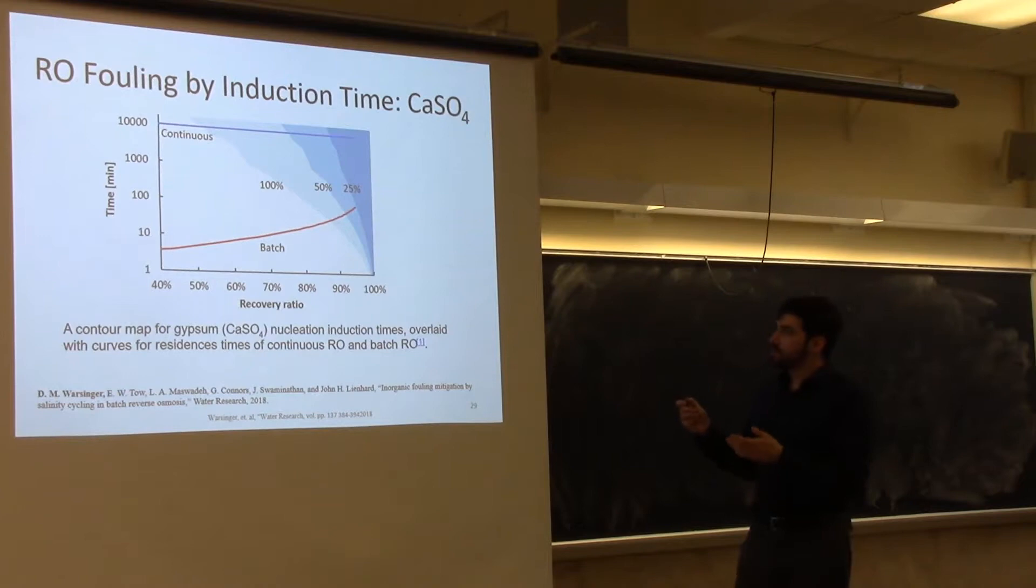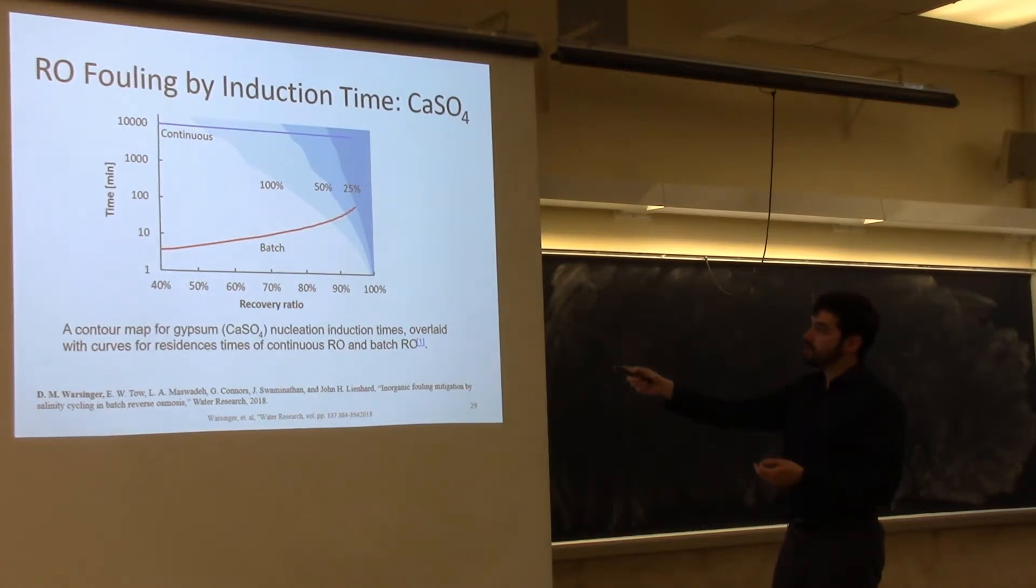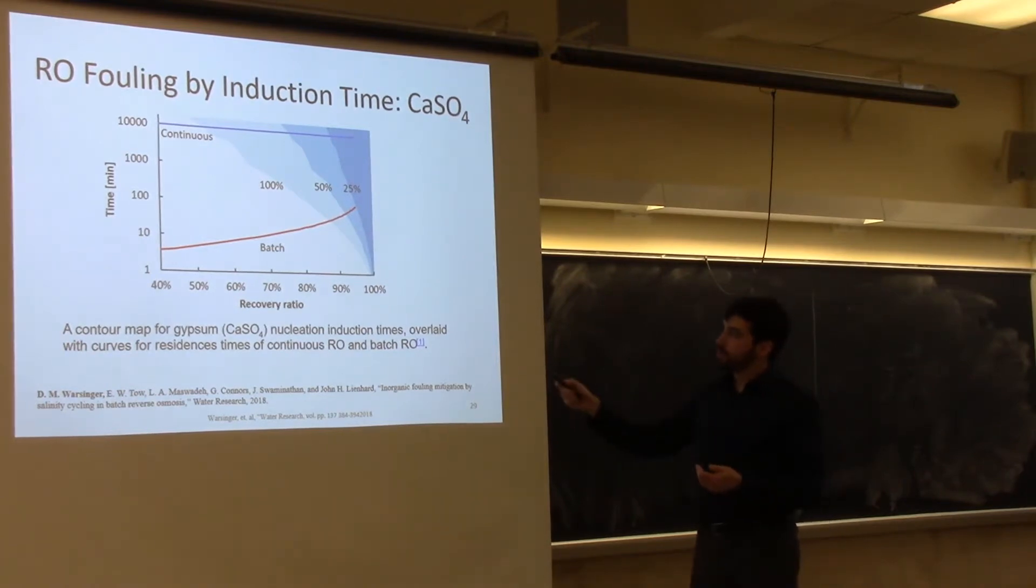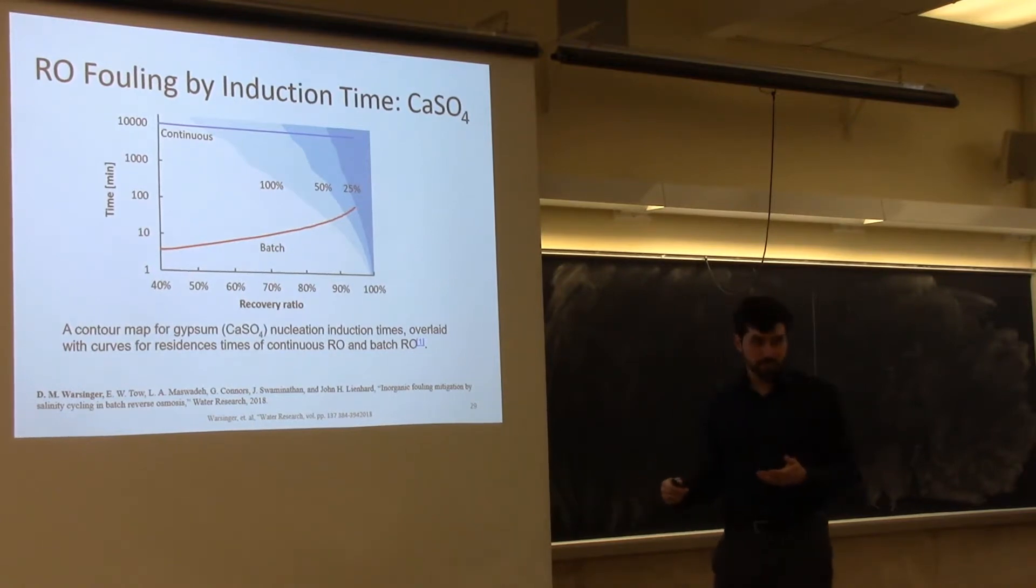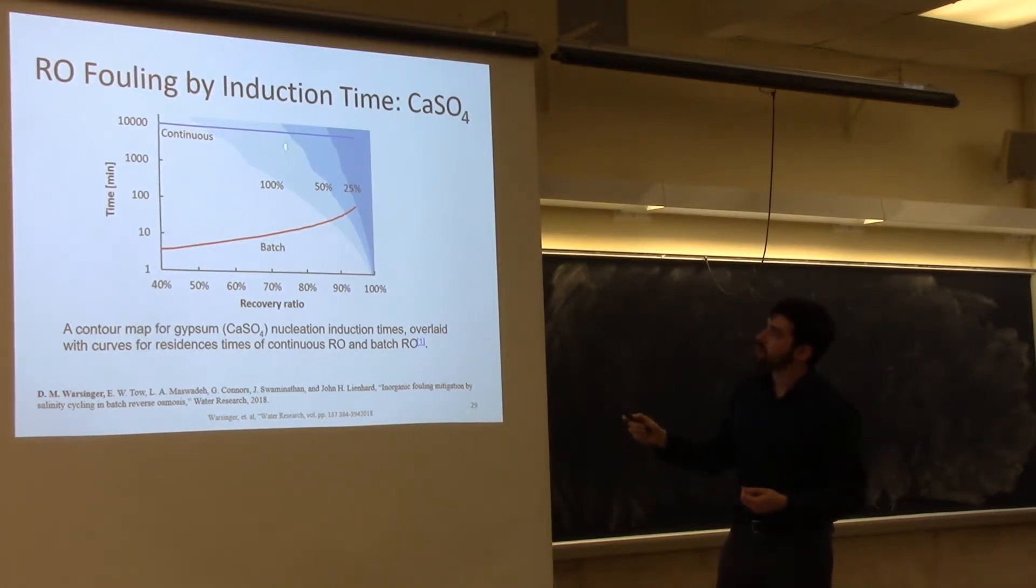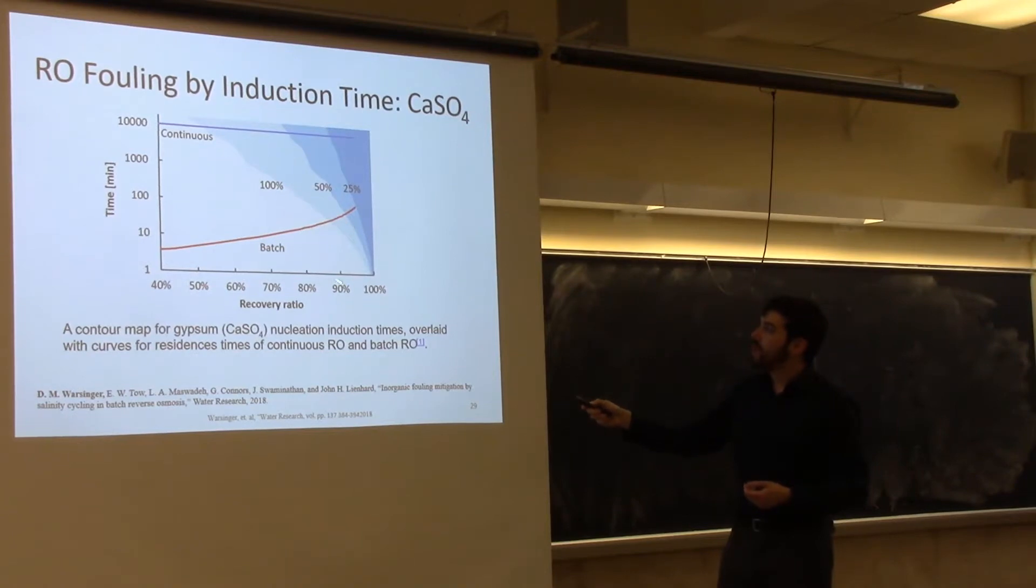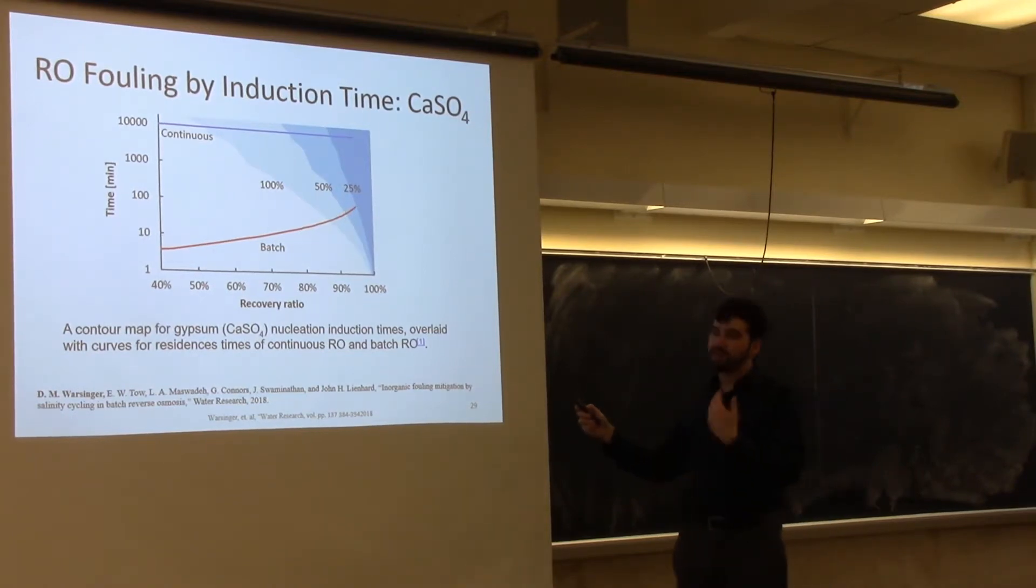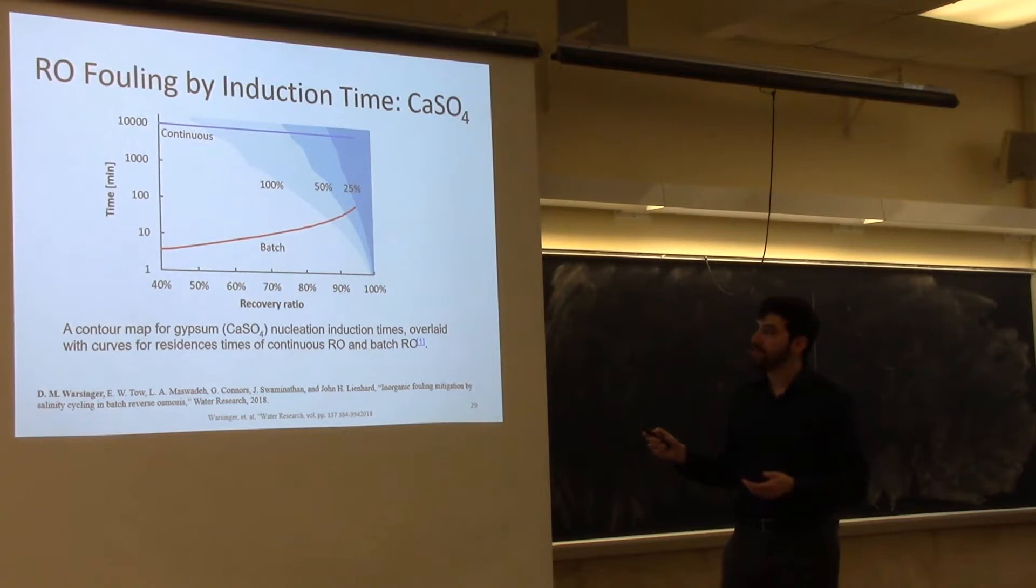In this study here, we did modeling where we looked at the expected crystallization, given the residence times, of solutions that either started at saturation, at 50% of the saturation concentration, or at 25% of the saturation concentration. We have a curve here for continuous and a curve here for batch. The point where they intersect tells you when you expect fouling to begin occurring. For continuous RO, if your salt is initially about half the saturation, we expect to start seeing fouling occurring around 70%. But if you have batch RO, you expect that your crystallization will begin occurring once you are about at 93% recovery, which means you get to vastly higher recovery.